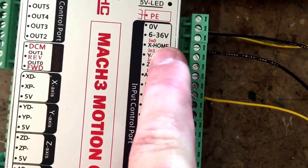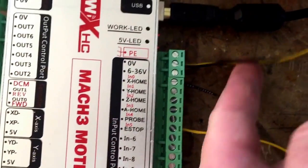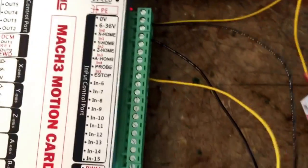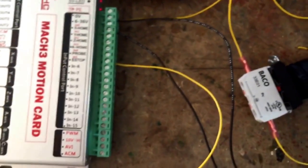And then the limit switch. I'm right now just running on X home. And then it shares the same ground essentially. Zero volts is ground in this world I guess.